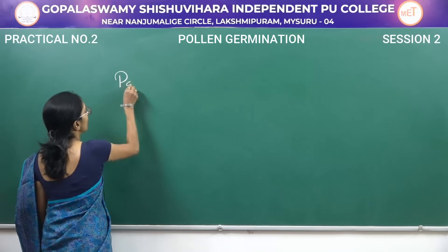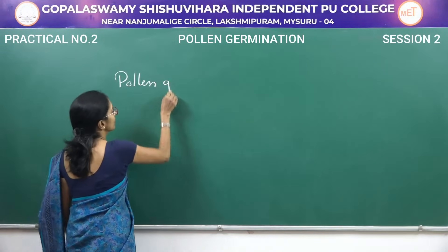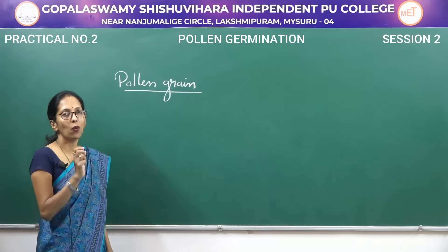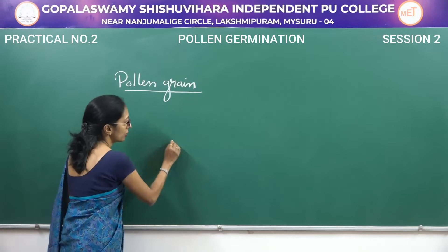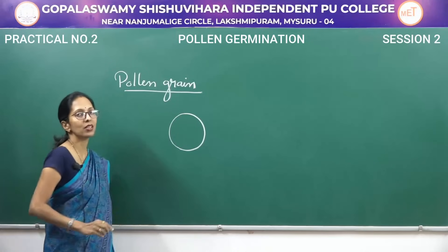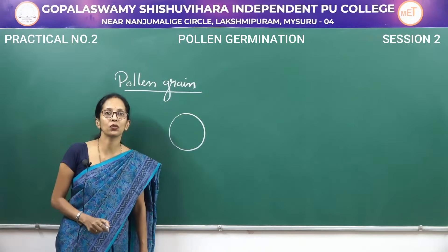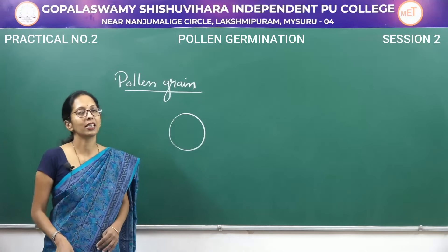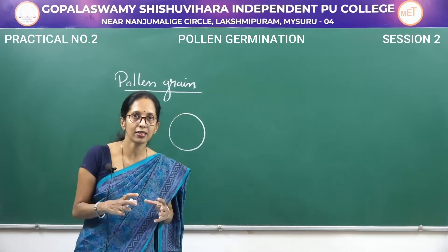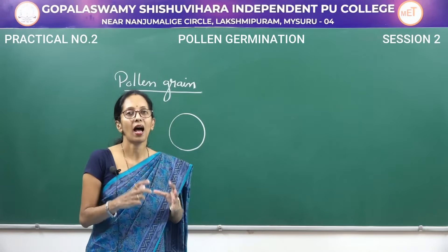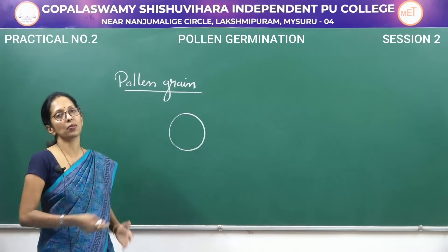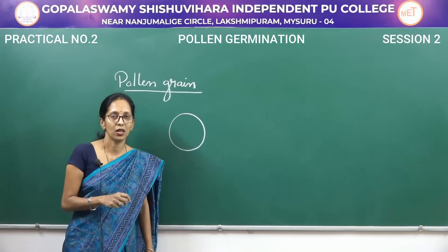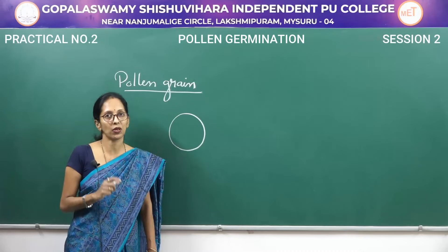So what is meant by pollen grain? It is a microscopic oval or spherical shaped structure that develops inside the microsporangia. Microsporangia are the chambers or sac-like structures present inside the anthers. When we take the transverse section of the dithecal anther, we can see the presence of four chambers, and each chamber is said to be a microsporangium.